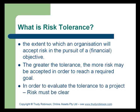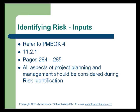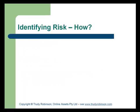In order to evaluate tolerance to a project, the risks must be clear. We must therefore look at the inputs. How do you identify risks? Please look at PMBOK 4, section 11.2.1, pages 284 to 285. All aspects of project planning and management should be considered during risk identification. As with most things in project management, there is no specific science. The best source of information is from experience — which might be an experienced person or previous projects. Therefore, you ask questions.